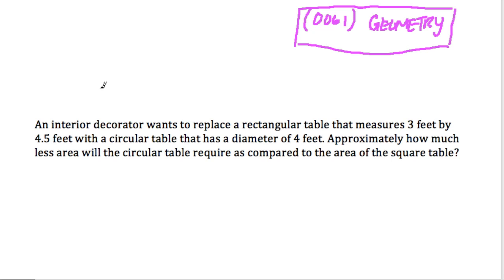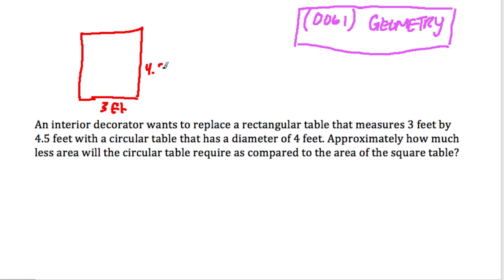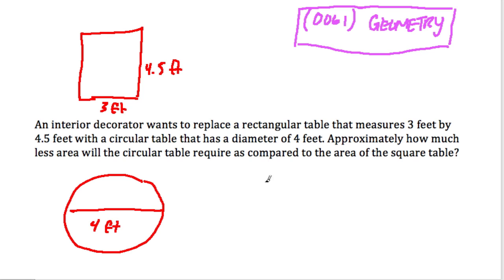We're going to have a mix of types of questions here, and we're going to start with this one. Here we have a comparison of circles and rectangles — an interior decorator wants to replace a rectangular table that measures 3 feet by 4.5 feet with a circular table that has a diameter of 4 feet. Approximately, how much less area will the circular table require compared to the area of the rectangular table?